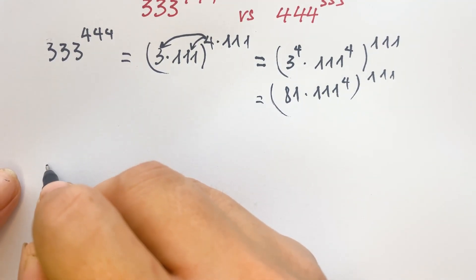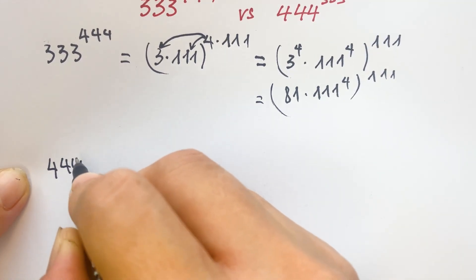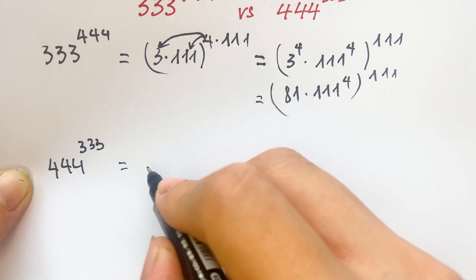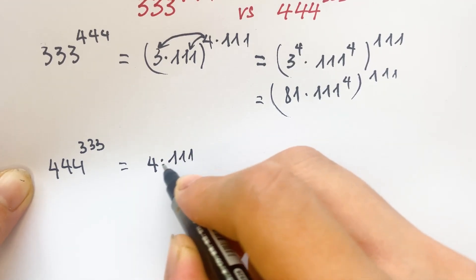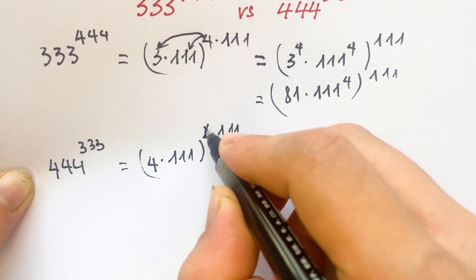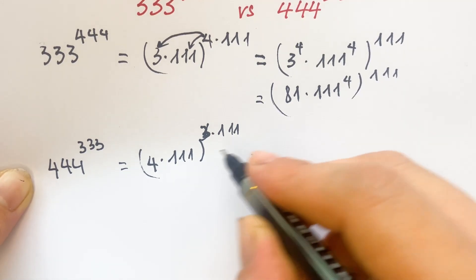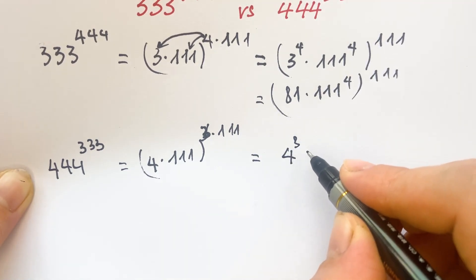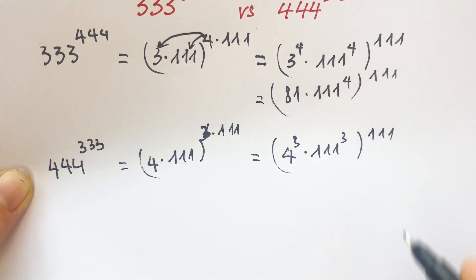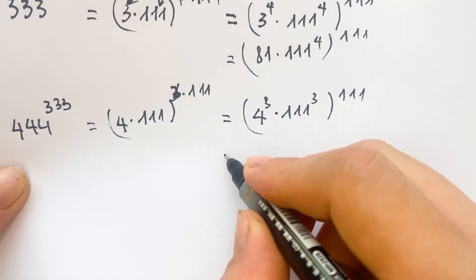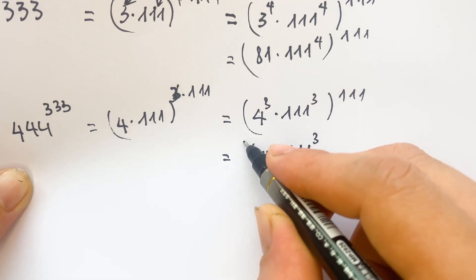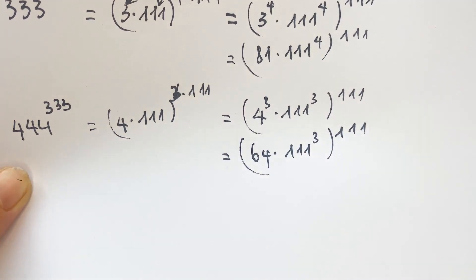And the second exponent: 444 to the power 333 is handled the same way. You break down 444 equals 4 times 111, to the power 3 times 111, which equals 4 cubed times 111 cubed, whole to the power 111. And 4 cubed equals 64, so this becomes 64 times 111 to the power 3, whole to the power 111.